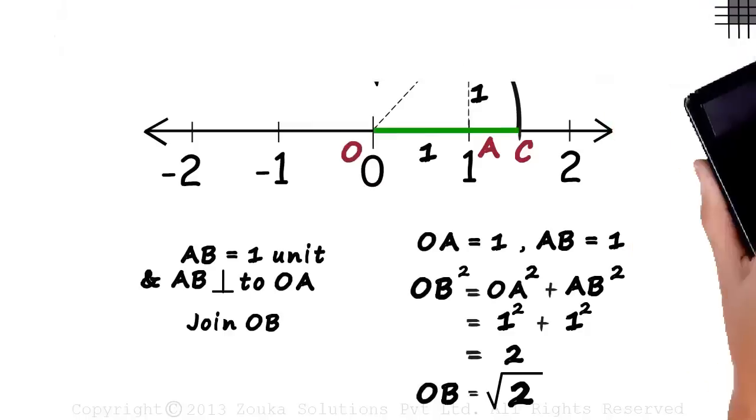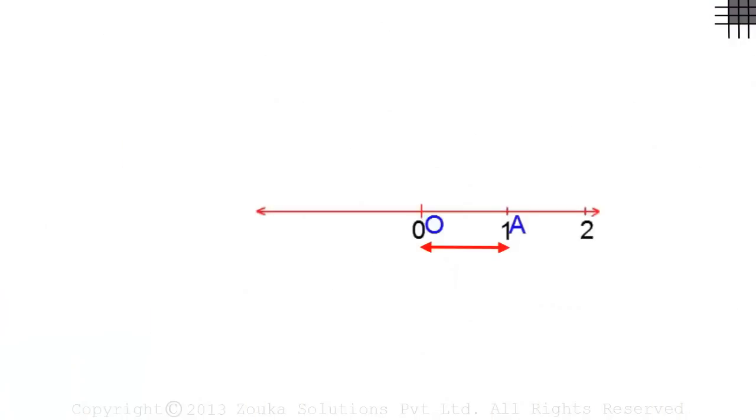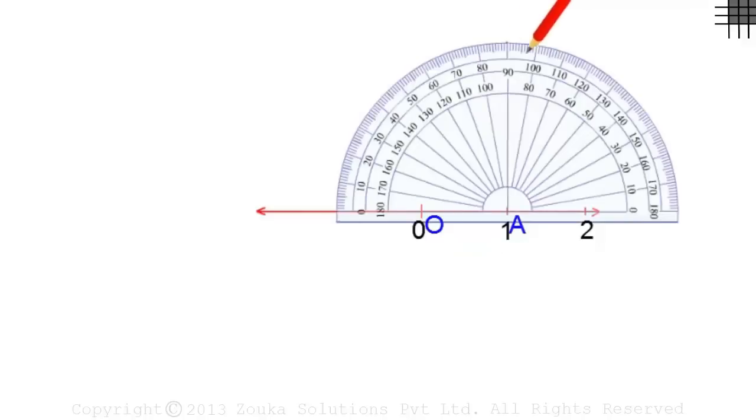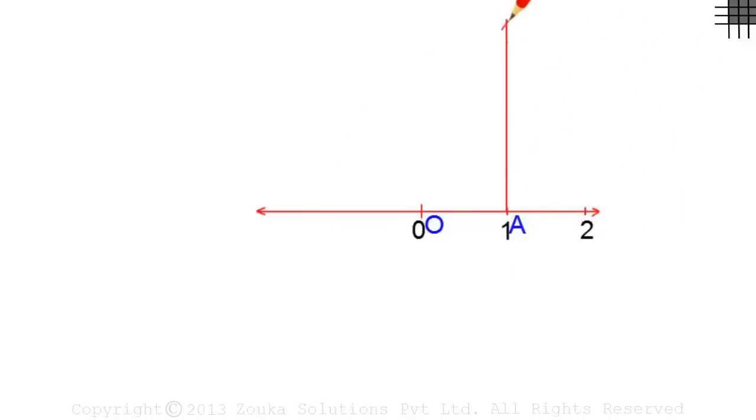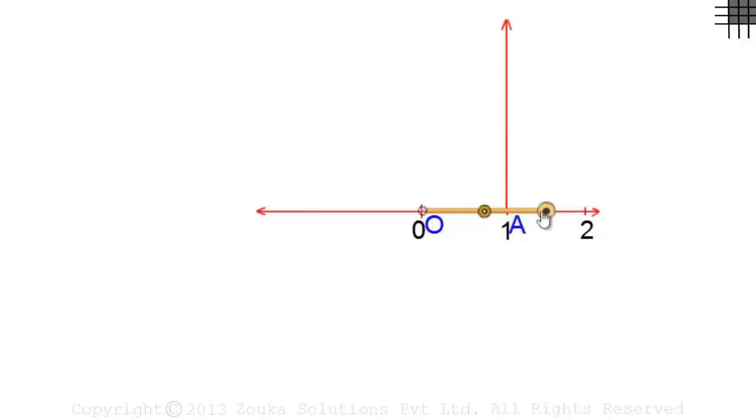Let's quickly see how we can actually construct it. Let OA be one unit long. Then we take a protractor, make a 90-degree mark, and join that point to A. Then on the compass, we take the length of one unit and mark it on this line to get AB as one unit. And then we join OB.